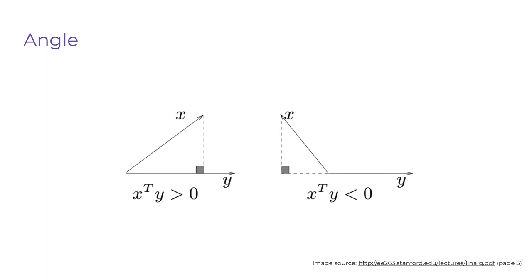If the dot product is greater than 0, then theta is somewhere between 0 and 90 degrees — basically an acute angle. On the other hand, if the dot product of x and y is negative, then theta is between 90 and 180 degrees — the angle is obtuse.